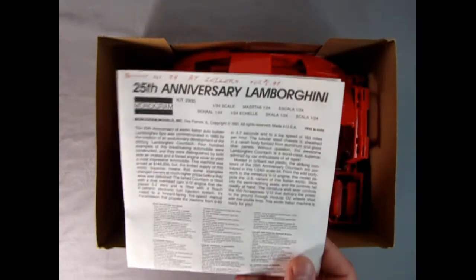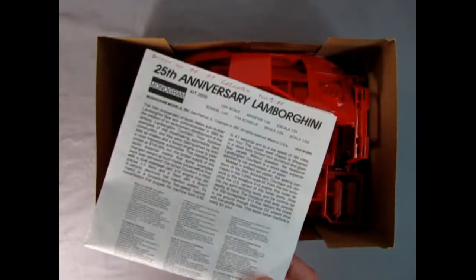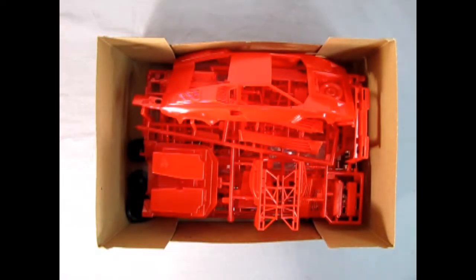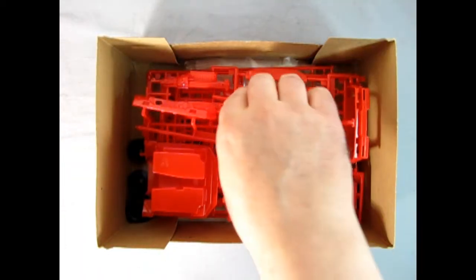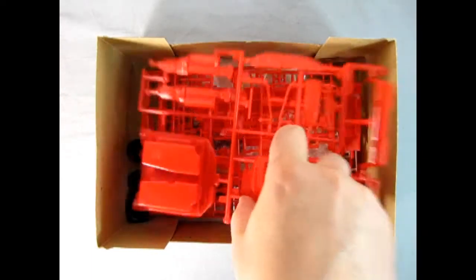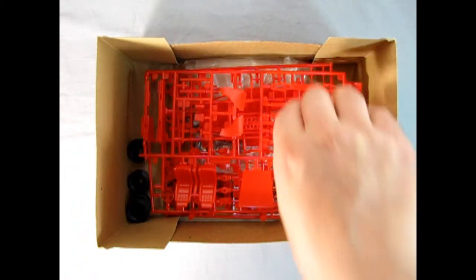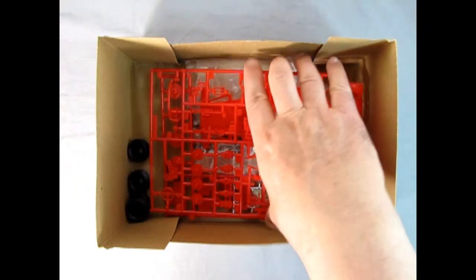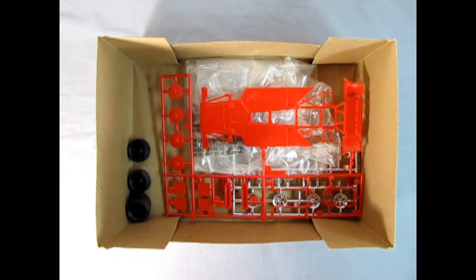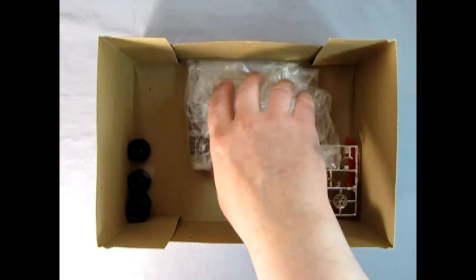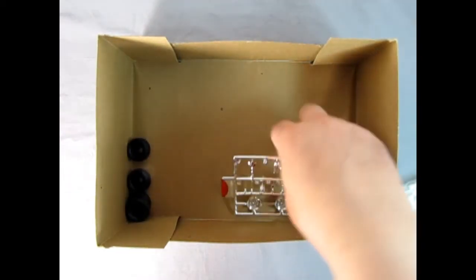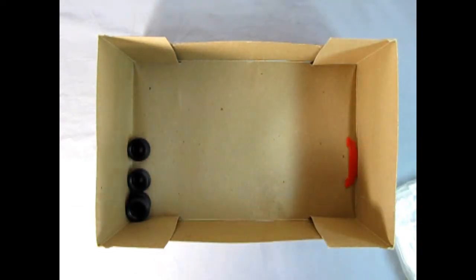Here we have the instructions for the 25th Lamborghini, which Danny the dog will take a look at. We've got the nice red body here, a whole bunch of red plastic components. These were in the bag originally, but I reversed that to put the bag onto the glass so it doesn't get scratched. There's our chrome components and we have the tires in the corner.